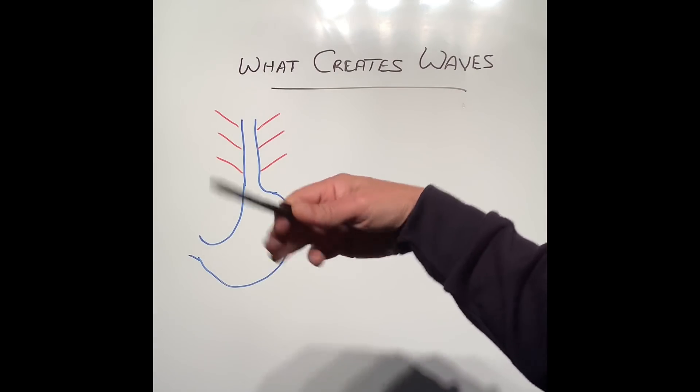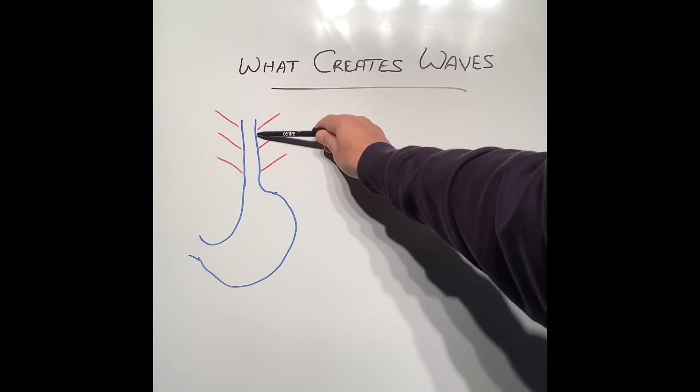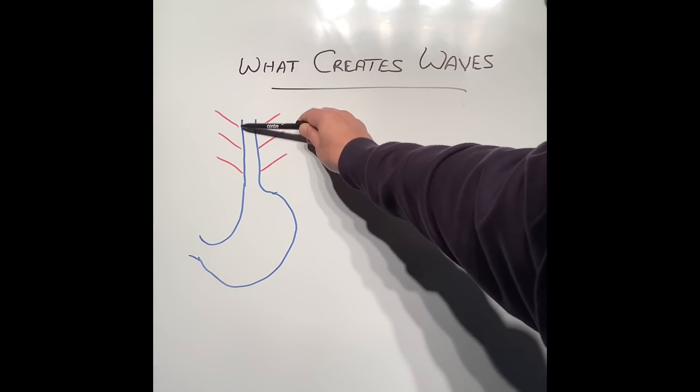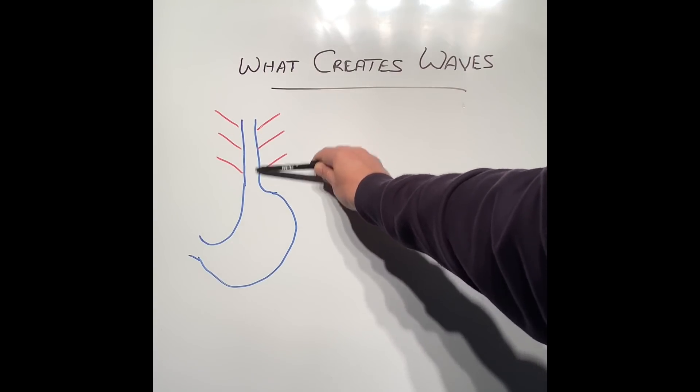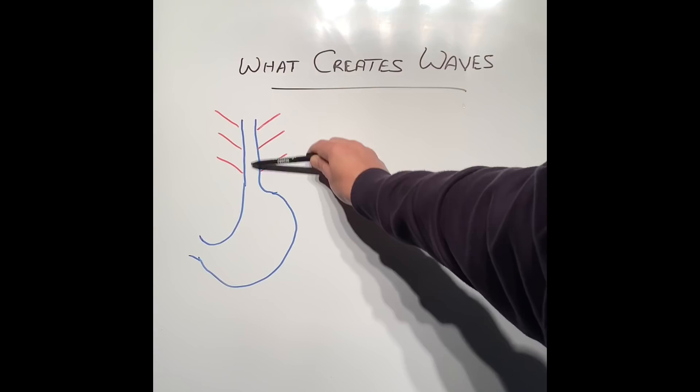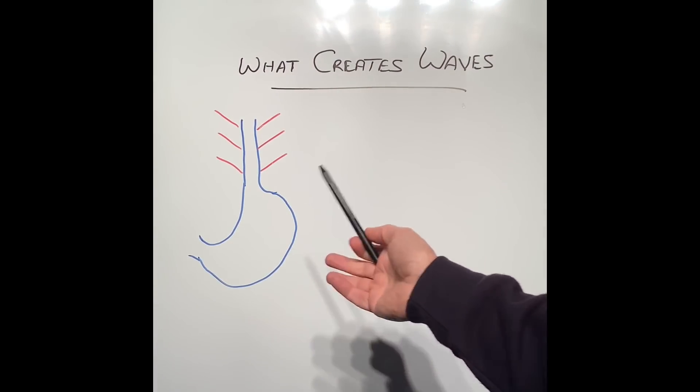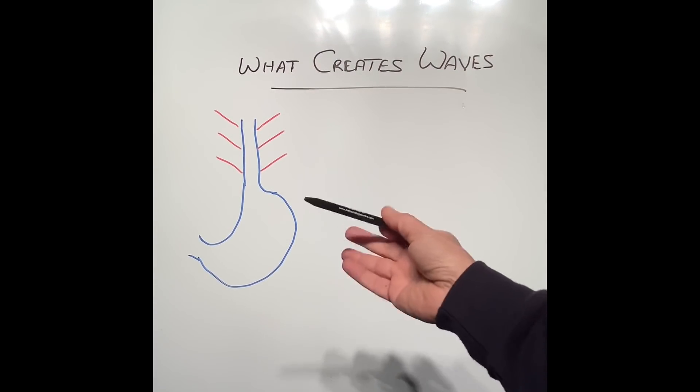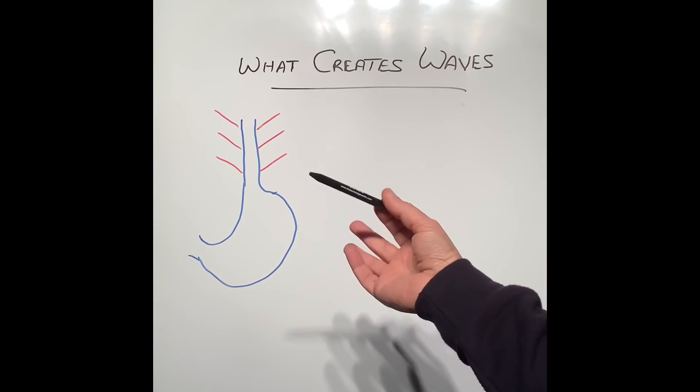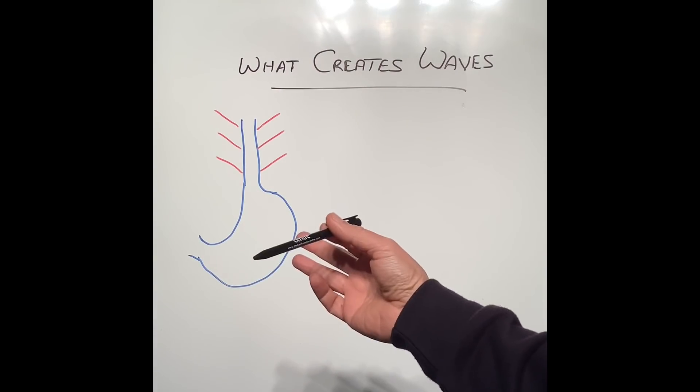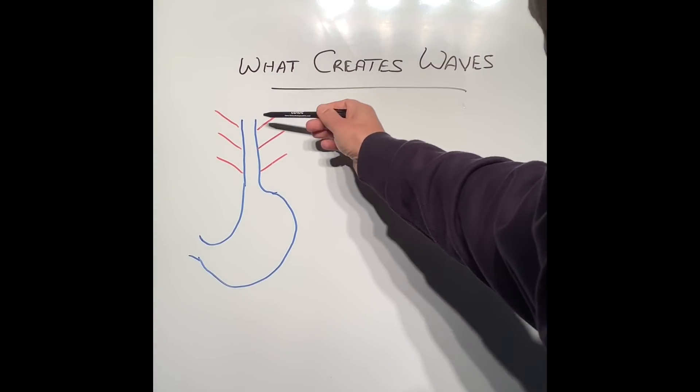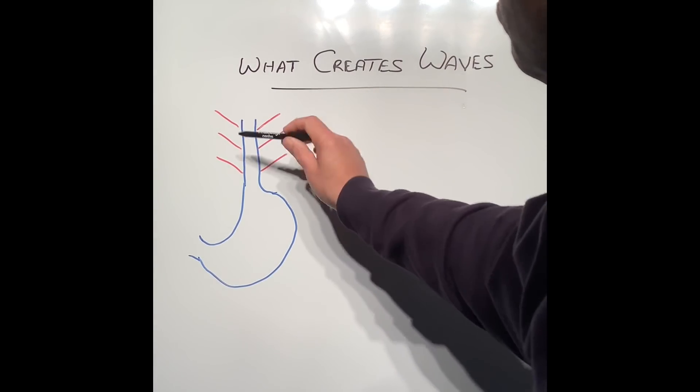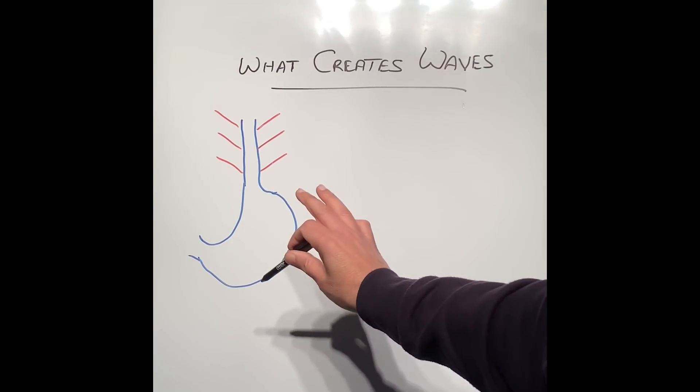The second most important thing which helps create these waves is the muscle which lines the esophagus. The esophagus has a wall, and in that wall the middle layer is the muscle. That muscle is like the engine of our car. If there is no engine, the car is going nowhere. Without having good muscle, the esophagus will not be able to create any waves.